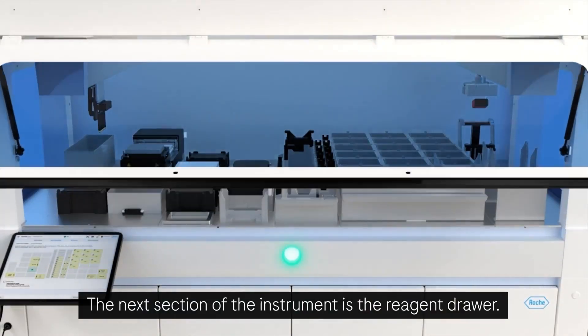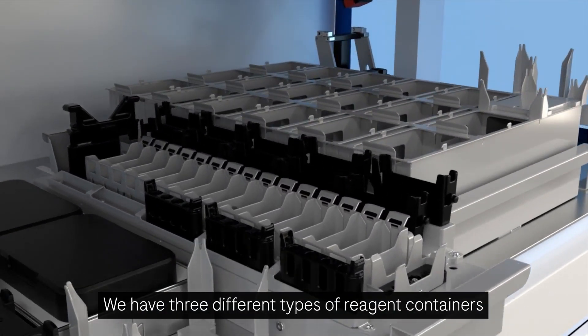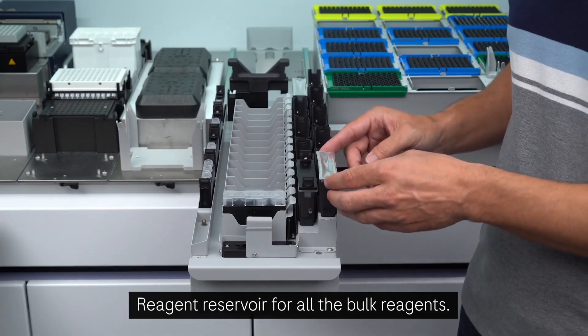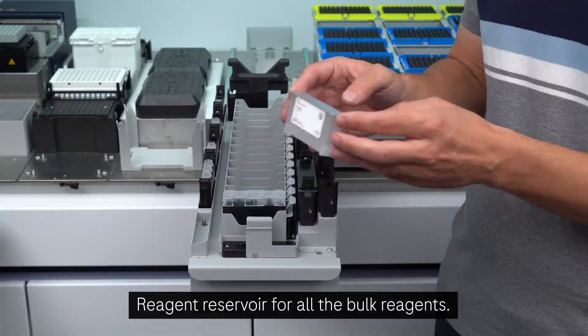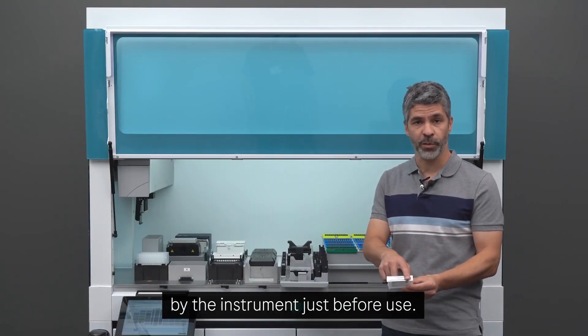The next section of the instrument is the reagent drawer. We have three different types of reagent container needed to perform the workflow. Reagent reservoir for all the bulk reagents. They come pre-sealed and will be pierced by the instrument just before use.